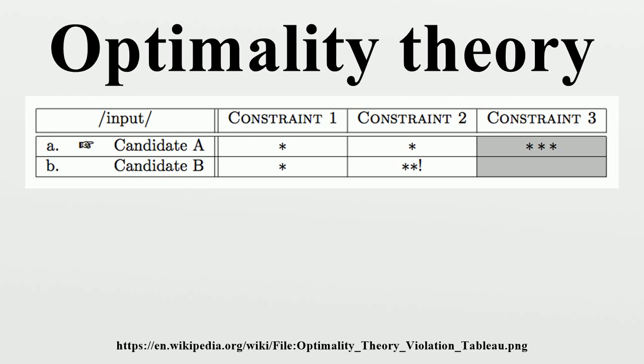The pointing finger marks the optimal candidate, and each cell displays an asterisk for each violation for a given candidate and constraint. Once a candidate does worse than another candidate on the highest ranking constraint distinguishing them, it incurs a crucial violation. Once a candidate incurs a crucial violation, there is no way for it to be optimal, even if it outperforms the other candidates on the rest of CON.